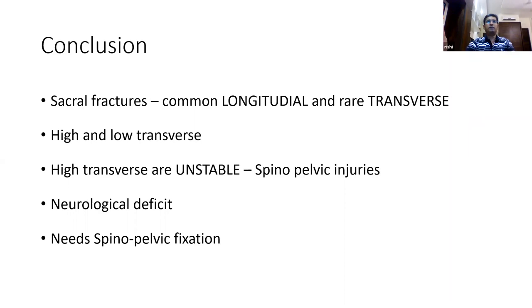In conclusion: sacral fractures are of two types — the common longitudinal type associated with pelvic injuries, and the rare transverse type which can be classified into high and low transverse. Low transverse fractures occur below the sacroiliac joint and are quite stable, treated conservatively. High transverse fractures are associated with longitudinal extensions into the sacral zone, making them potentially unstable and requiring treatment as spinopelvic disruptions. The main outcome depends on the extent of fracture displacement and neurological deficit occurring at the time of injury. Surgically, the preferred option is spinopelvic fixation with pedicle screws at L4 and L5 and iliac screws, giving very good outcomes. An alternative is bilateral iliosacral screws. Thank you.